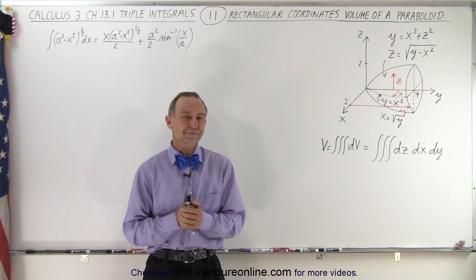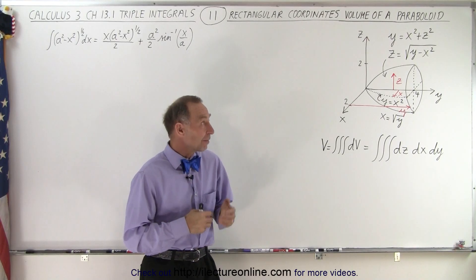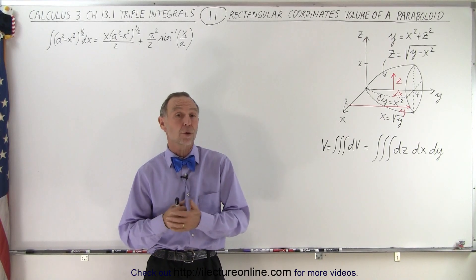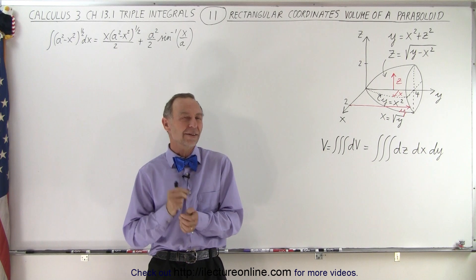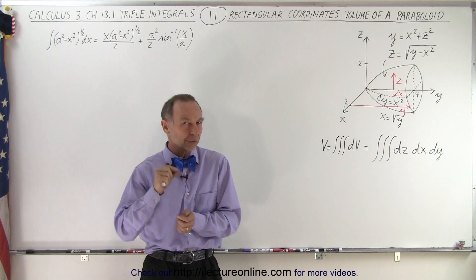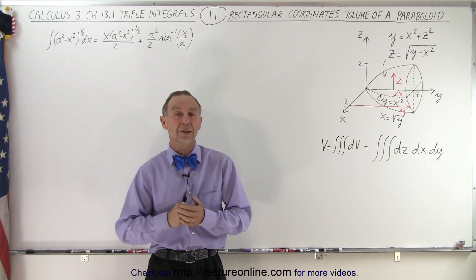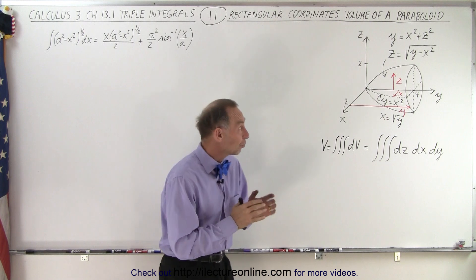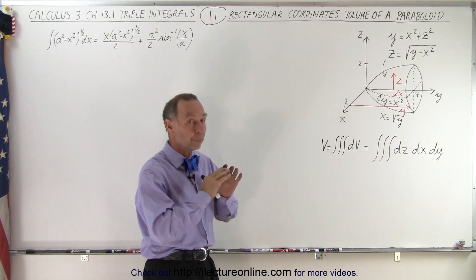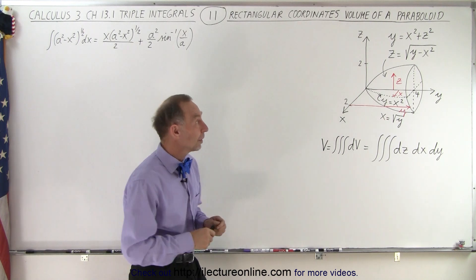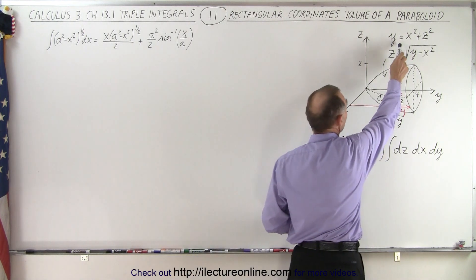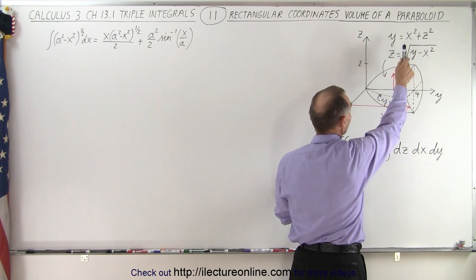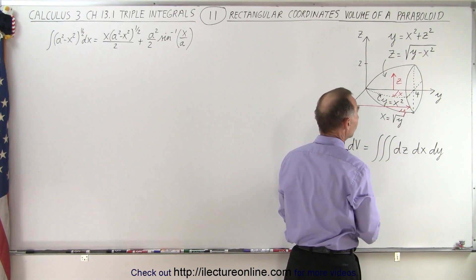Welcome to our lecture online. Here we have an example with rectangular coordinates that is a little bit more difficult than the one we did in the previous video. In this case we're dealing with a paraboloid, and the equation describing the surface of the paraboloid is y equals x squared plus z squared.